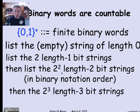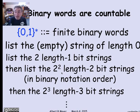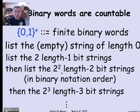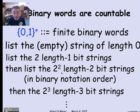Then list all the length-3 binary strings — there are eight of those. Keep going up to the length-n binary strings, of which there are 2^n. This is a description of a way to list one after another all of the finite binary words, and that listing implicitly describes a bijection from the non-negative integers n to the nth element in the listing. So the binary words are countable.